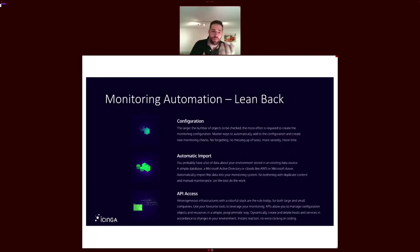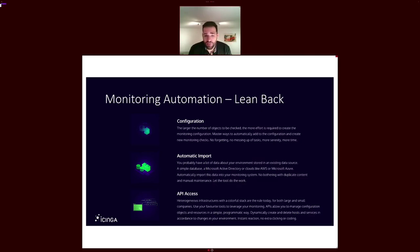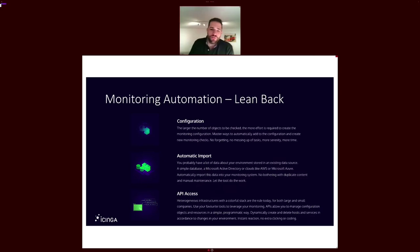An important part is the automation competency, which also has three main parts. First is the configuration itself — Icinga can be configured using config files, but we recommend using Icinga Director, a web UI you can use to configure your Icinga environment. We put a lot of effort into allowing you to import your data, whether from a hybrid cloud environment, AWS, Azure, text files, or a CMDB you use in your company.